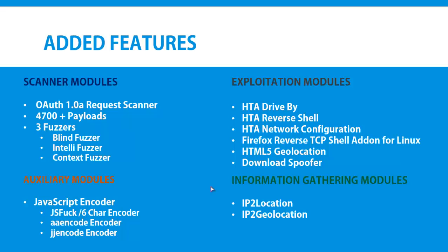Let's have a look into the Exploitation modules. This version will have an addition of HTML application drive-by, HTA reverse shell, HTA network configuration, and the Firefox reverse TCP shell add-on for Linux. We also have social engineering related modules including the HTML5 geolocation exploitation module, download spoofer, and more.